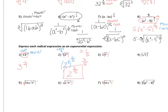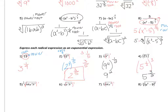For example three, you could write nine to the four over two, but using the one-step approach: nine to the fourth to the one-half power because it's the square root. Multiplying four and one-half gives two, so nine squared. For example four, it's a square root, and working from the inside out, we make it five to the one-half to the third power, and multiplying gives five to the three-halves. For example five, it's a square root, so two is the root on the bottom and one is on top, giving 64a to the fourth b to the sixth, all to the one-half power.